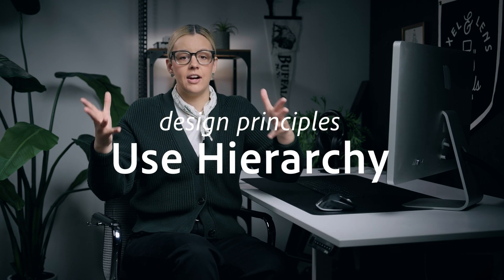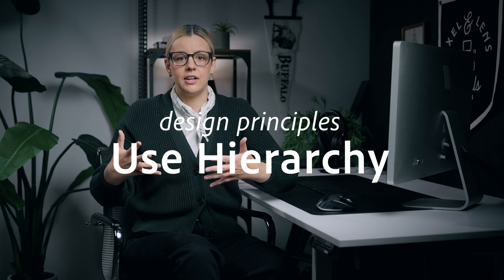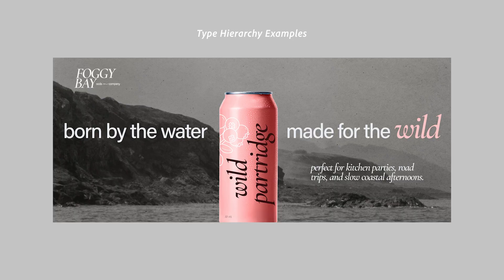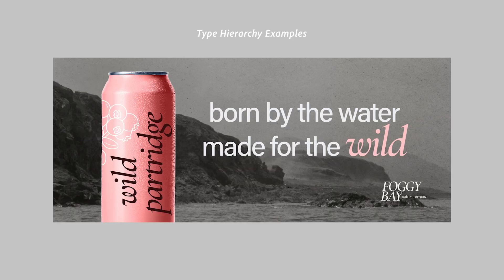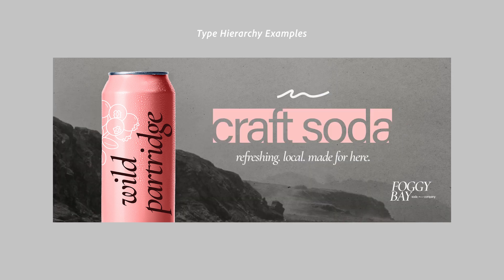The second principle is hierarchy. You want to make sure that the most important information in your campaign stands out by either making it bigger, bolder, or a different color or highlighted. This helps guide the viewer's eye to what you want them to focus on first when viewing your campaign assets.